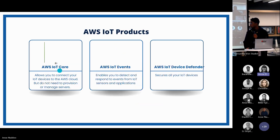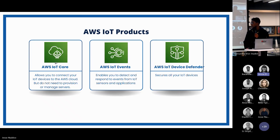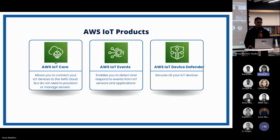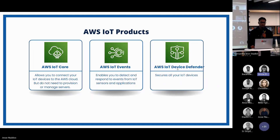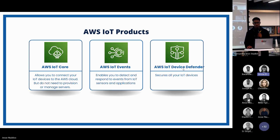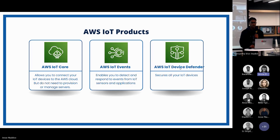To elaborate more on the cloud software, AWS has a bunch of IoT products they offer. For example, they have IoT Core, which allows you to connect your IoT devices to the AWS cloud, but unfortunately this does not provision or manage any services for you. There is also AWS IoT Events, which enables you to detect and respond to events based on sensor data. You also have AWS IoT Device Defender, which provides extra security for all your IoT devices.